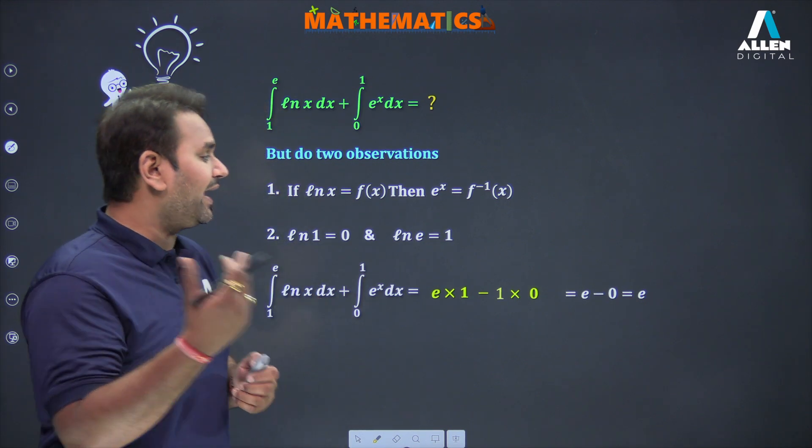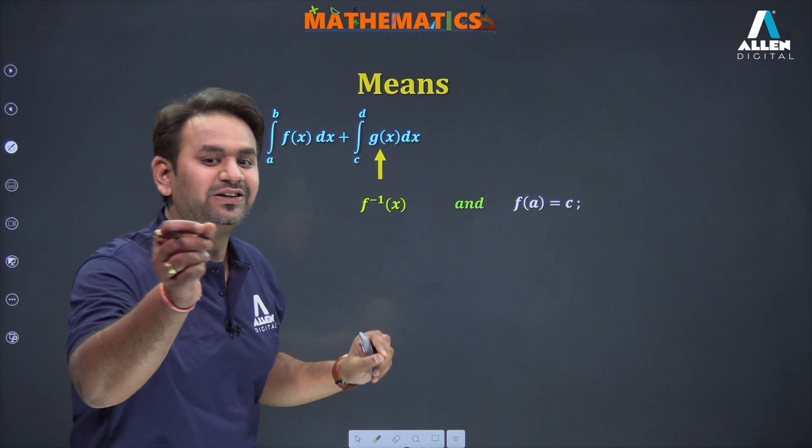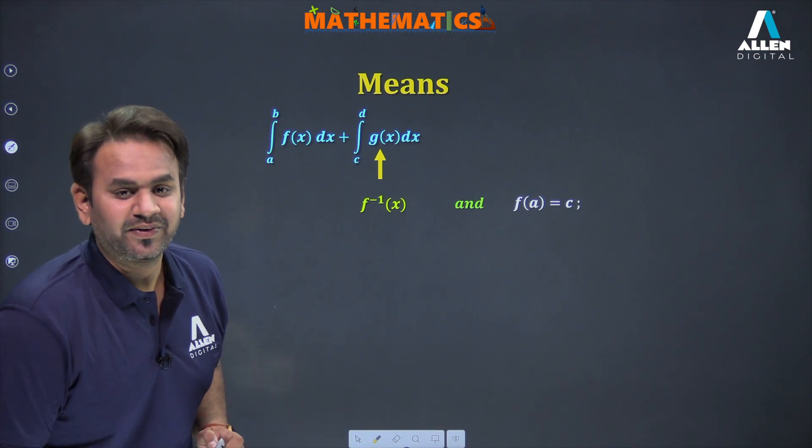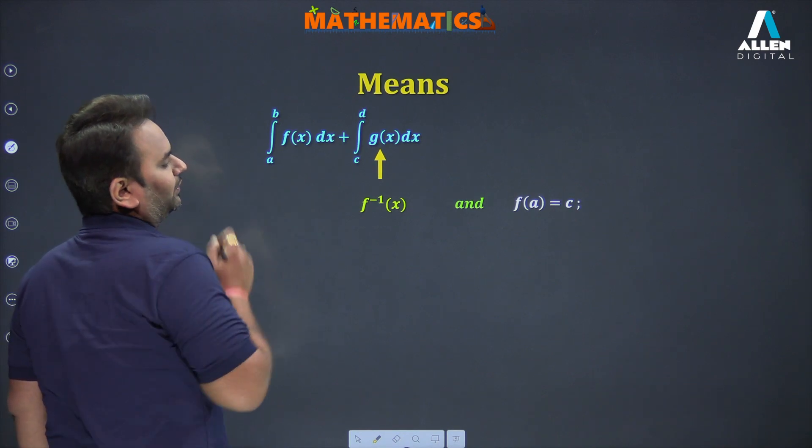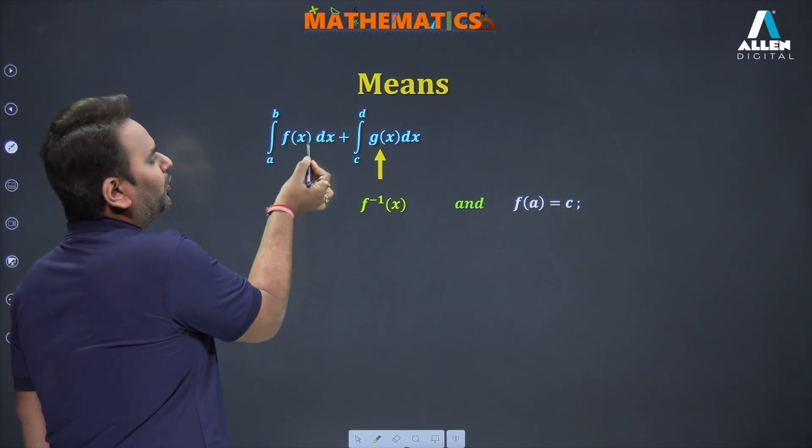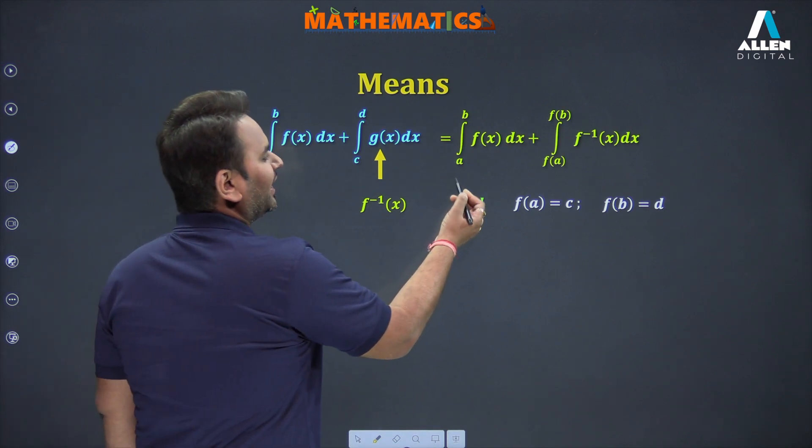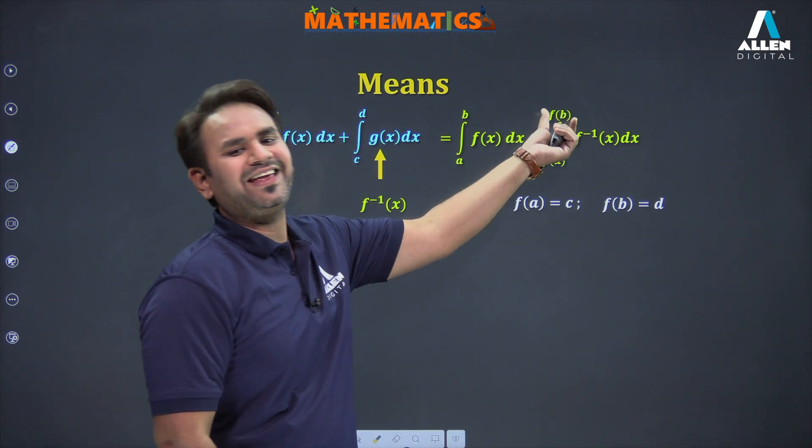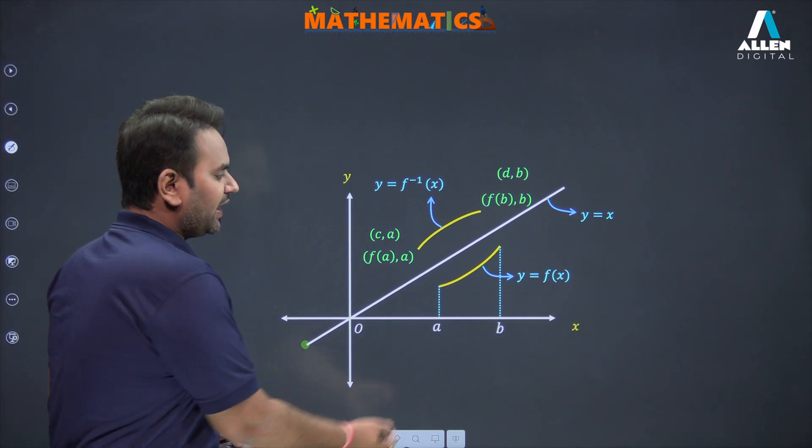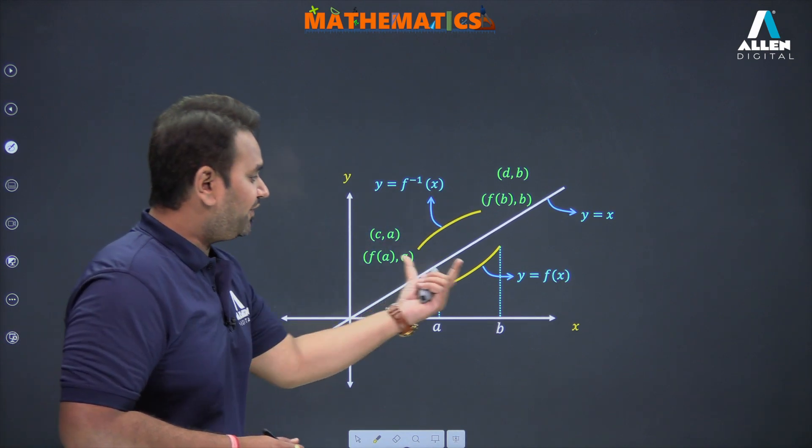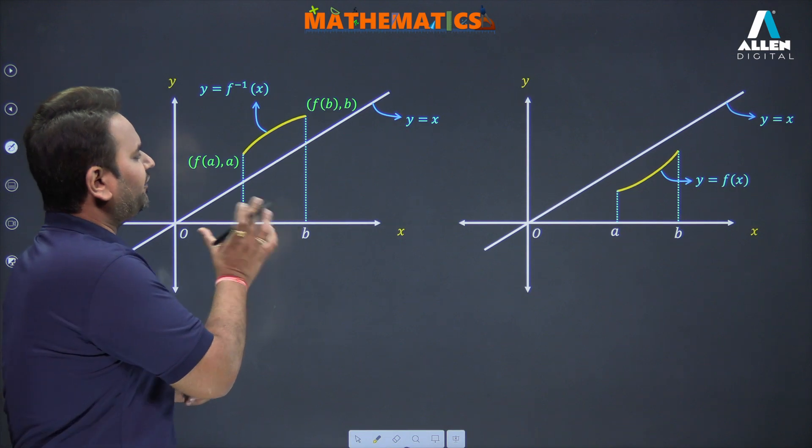This means that if I write integral from a to b of f(x) dx plus integral from c to d of g(x) dx, and I say g(x) is my f inverse x, then it becomes integral from a to b of f(x) dx plus f inverse x. But the limits will change: if I put a in f(x) I get c, and if I put b I get d. So if f(a) is c and f(b) is d, then this function becomes integral from a to b of f(x) dx plus integral from f(a) to f(b) of f inverse x dx.